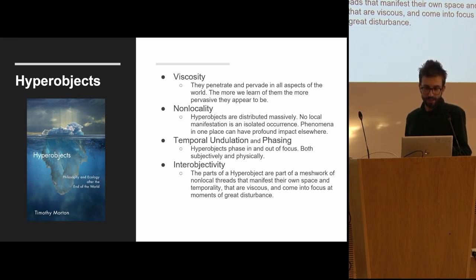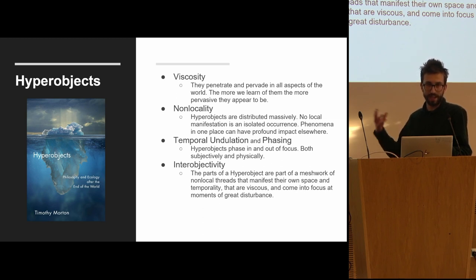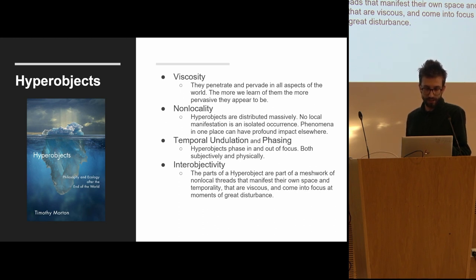Third is phasing. Global warming phases in and out and is brought in and out of focus at different times. For example, the record high temperatures in the UK this summer brought climate crisis again to the front of the public agenda. And fourth is intro-objectivity. All these hyperobjects have entities that make up this single beast, all acting together in non-local threads that manifest their own space and time. They are viscous and come into focus at moments of great disturbance. Global warming is happening all the time, but we tend only to address it at moments of great catastrophe.